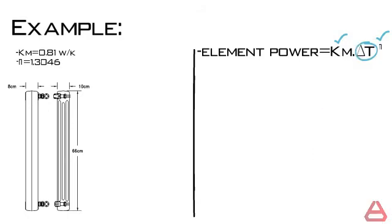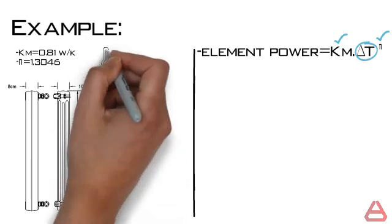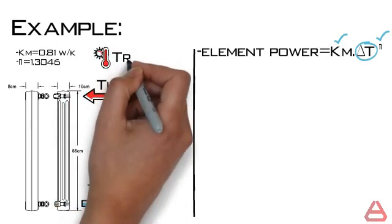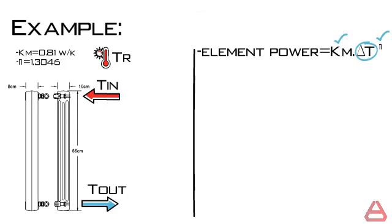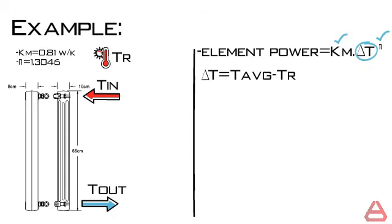Delta T on the other hand is not a function of the radiator material or geometry, but actually is a function of the in-out temperatures of the radiator and the required room temperature. It is equal to the difference of the average of T in and T out and the room temperature.